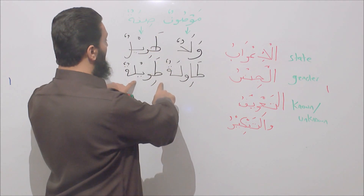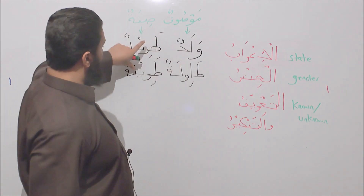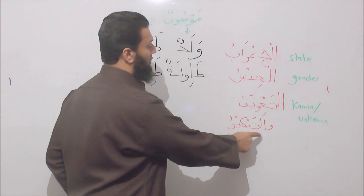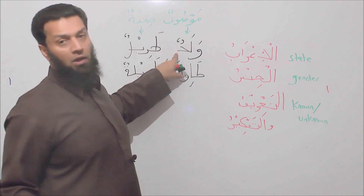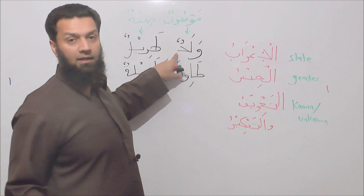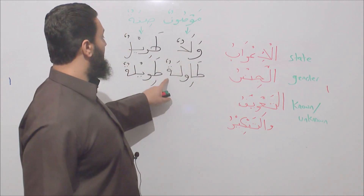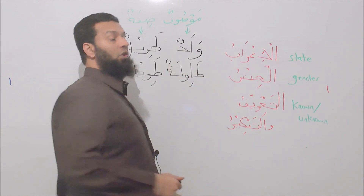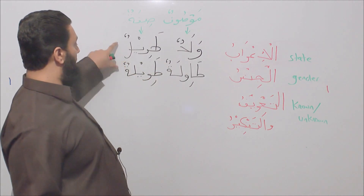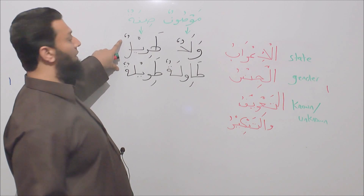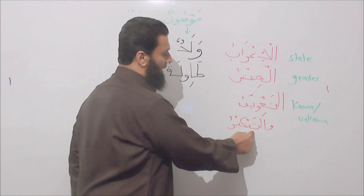There must be agreement between sifatun and mawsufun with regards to al-ta'arifu wa-tankir. For example, waladun — is that known or unknown? Unknown, because the indicator is the tanwin at the end. And tawilah — a table — is that known or unknown? Unknown as well. Therefore, in both instances, the sifatun will end with tanwin and it will match the mawsufun in being unknown — indefinite.